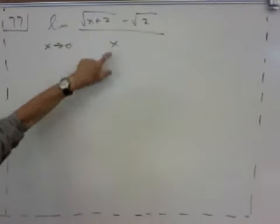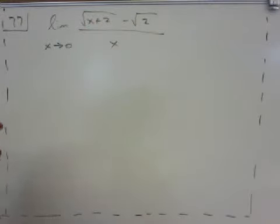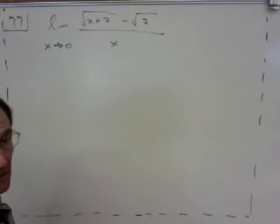Notice if x goes to 0, you're going to have root 2 minus root 2 over 0, so it would be 0 over 0. So we don't know what's going on here, so we're going to have to do some algebraic manipulation to figure out what this limit's going to be.